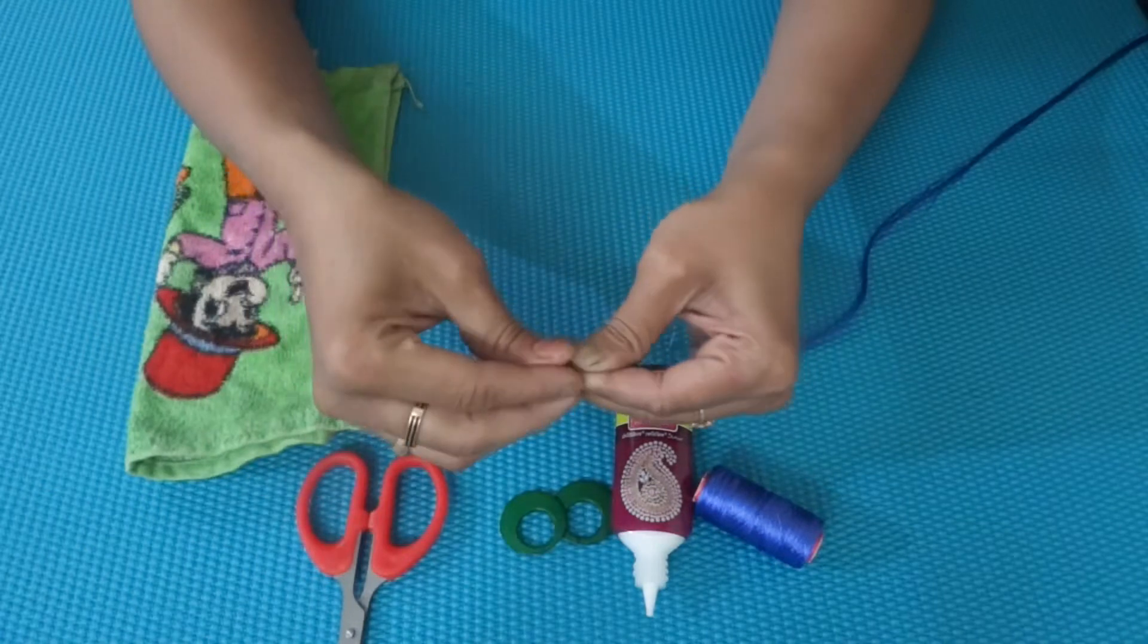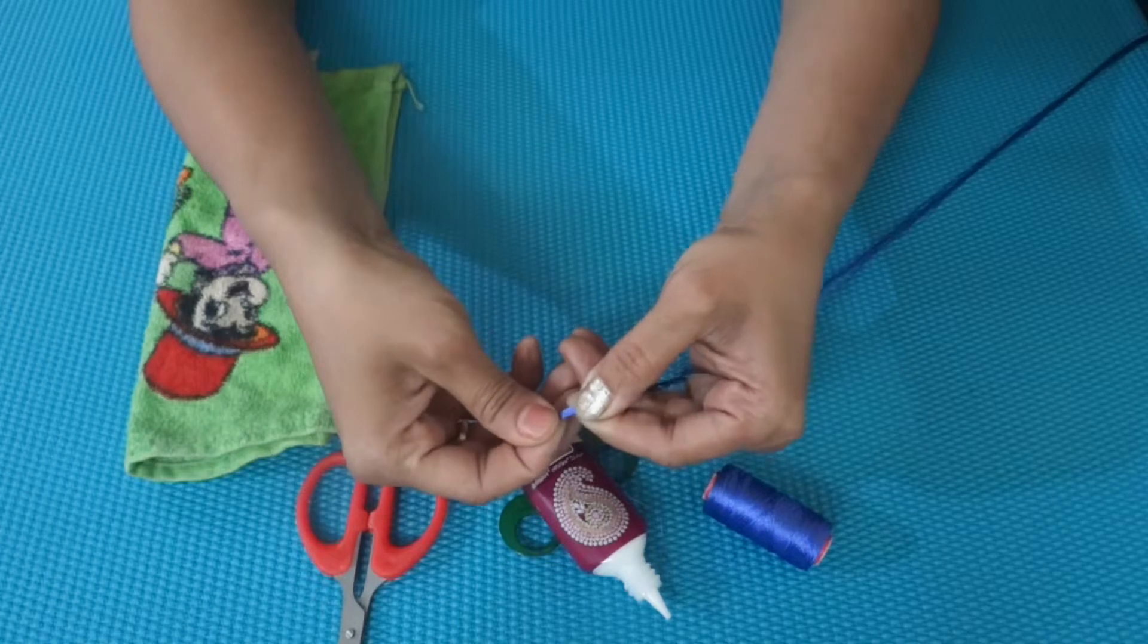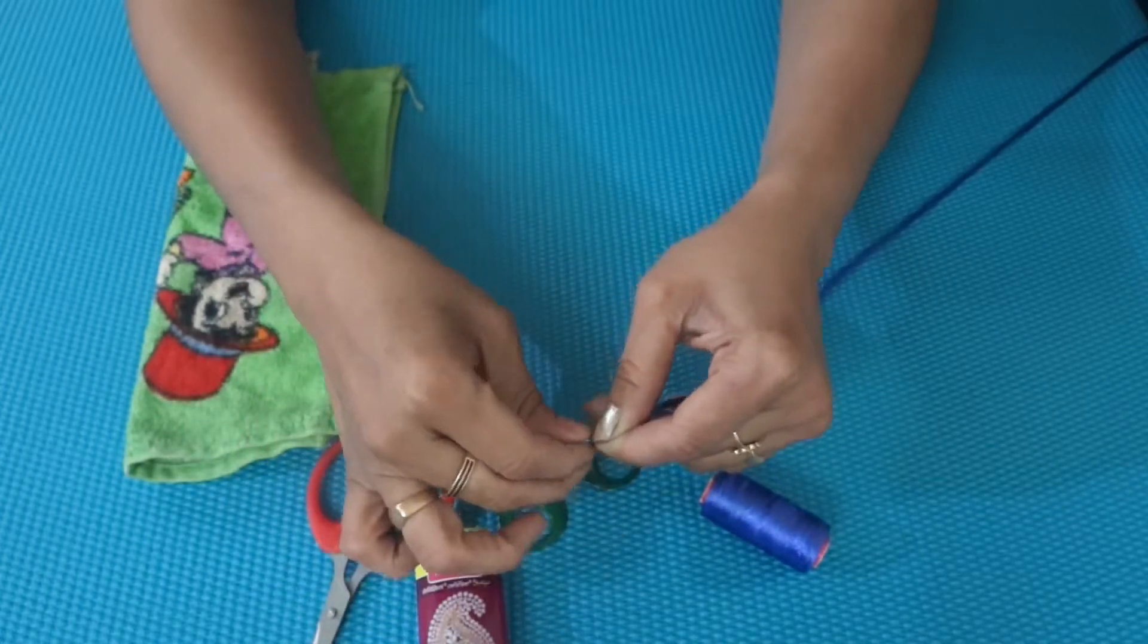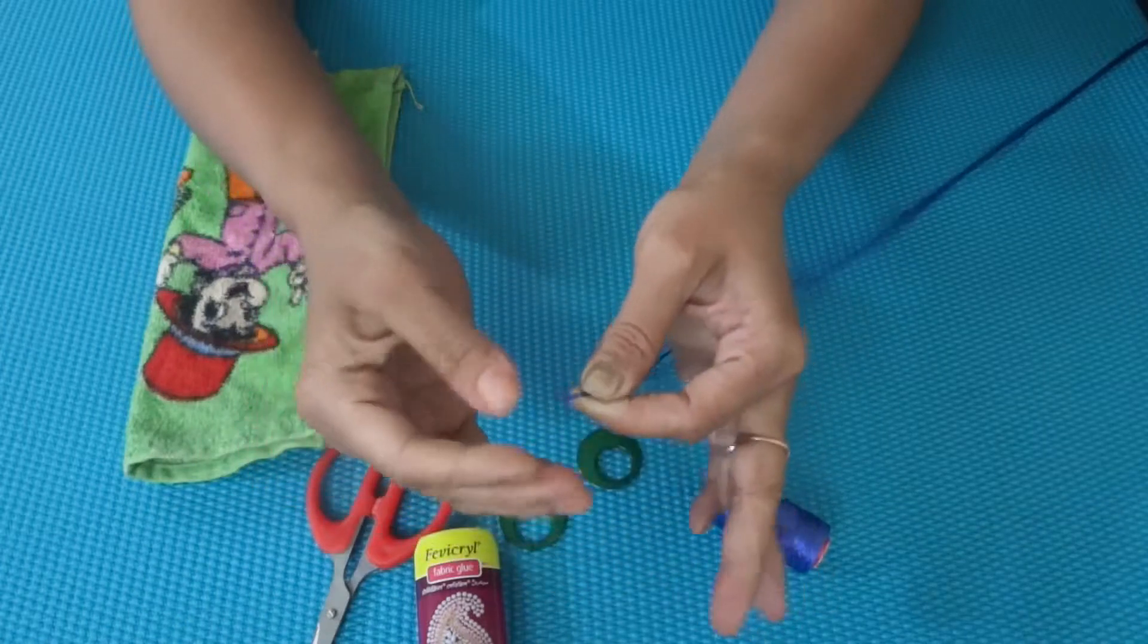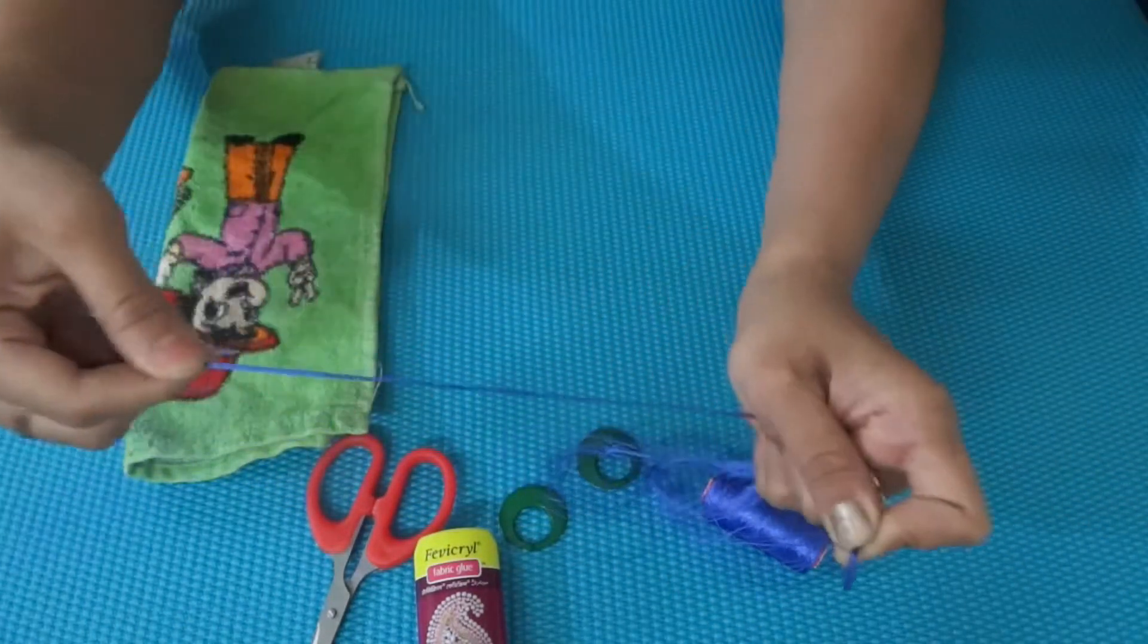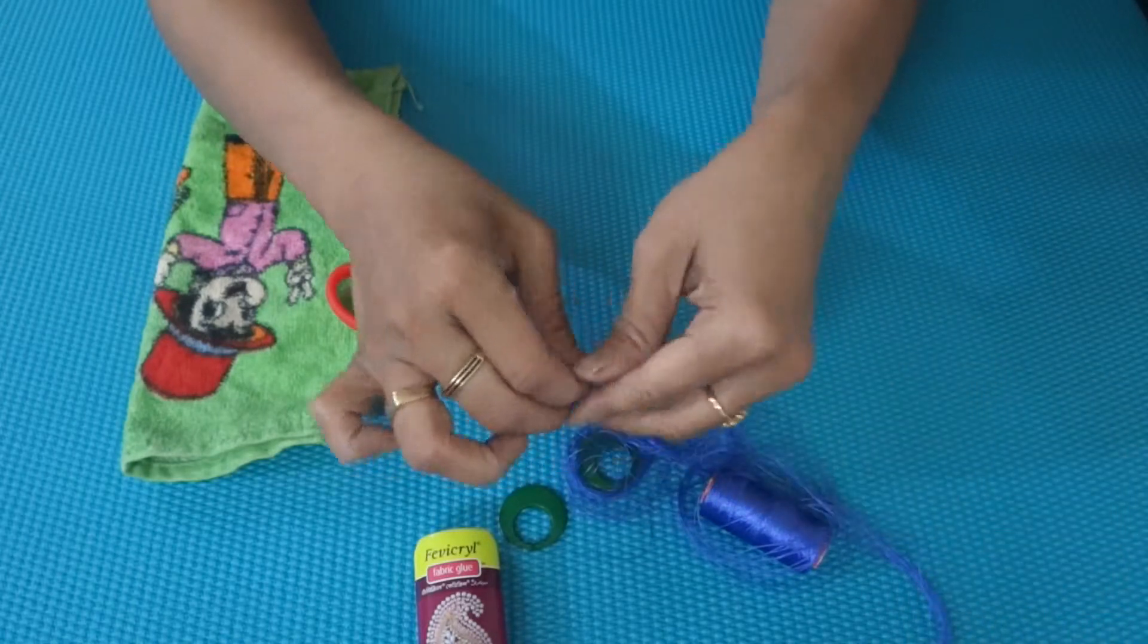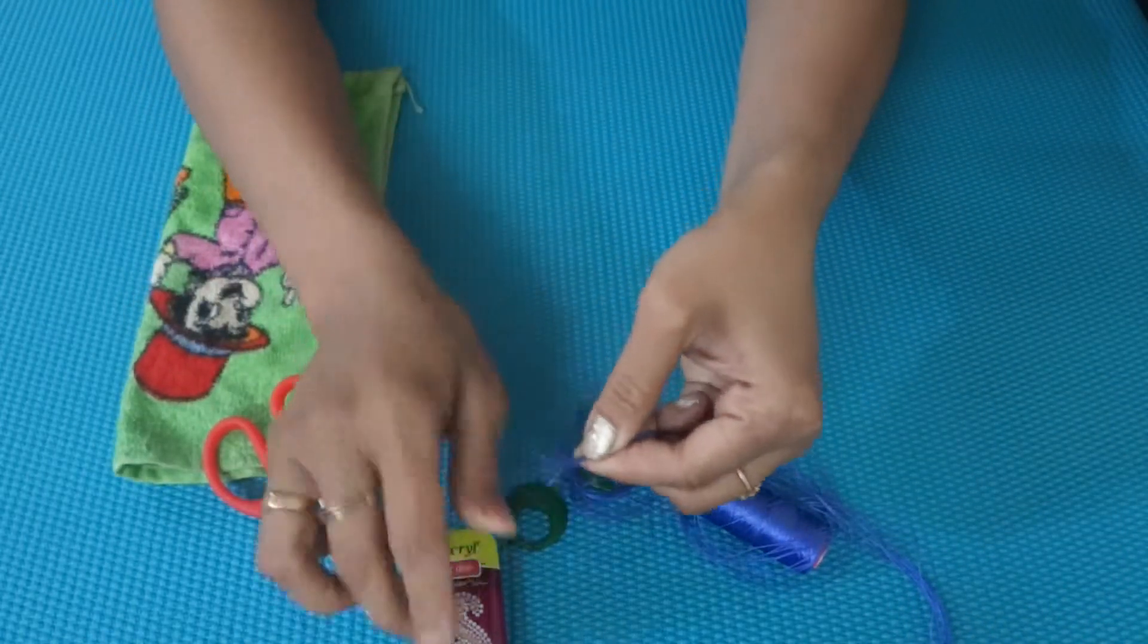Let us see the procedure now. I have taken a thread count of sixteen and I am applying the glue. Hold the thread widely and apply the glue. As I told you again, I'm not gonna use the needle, so I am making the end part little sharp and giving it a needle finishing touch.